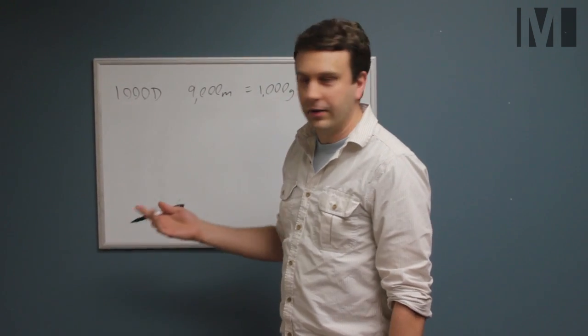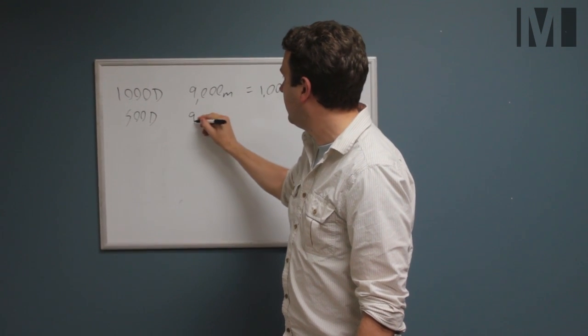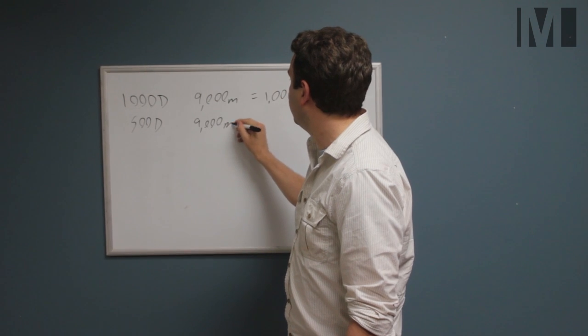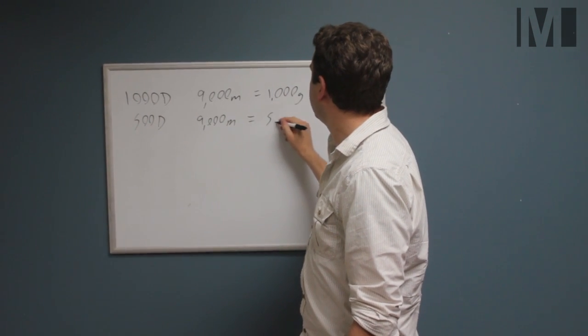So the other obvious example is 500D fabric means that 9,000 meters of the yarn that makes up that fabric weighs 500 grams.